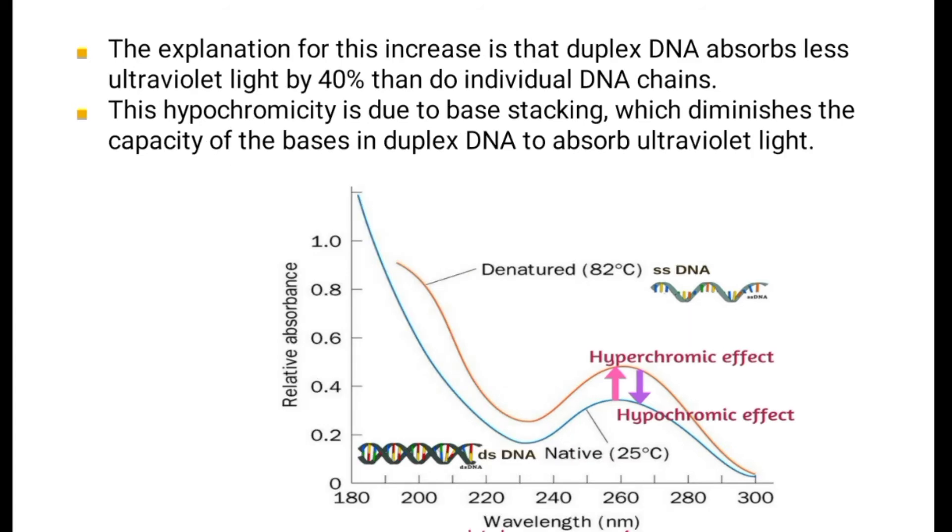The explanation for this increase is that duplex DNA absorbs less ultraviolet light by 40% than do individual DNA chains. This hypochromicity is due to base stacking, which diminishes the capacity of the bases in duplex DNA to absorb ultraviolet light.